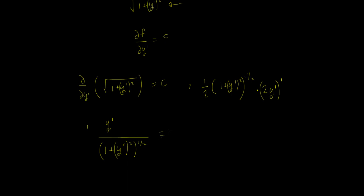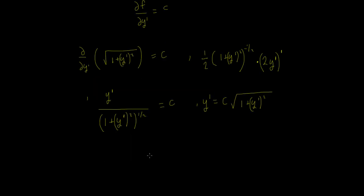Now we know that equals some constant c. So we could say y' = c · √(1 + y'²). We can then square both sides: y'² = c² · (1 + y'²).